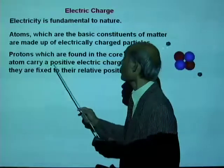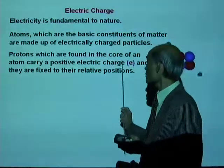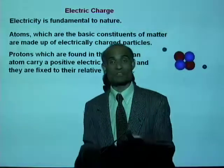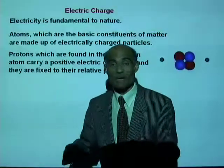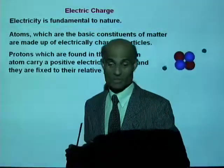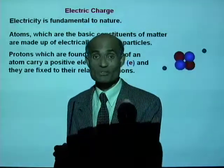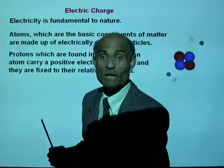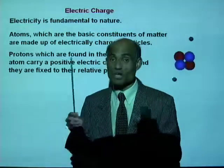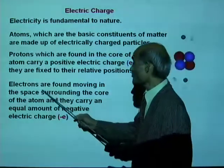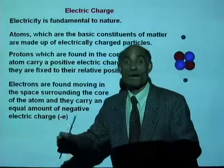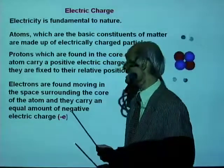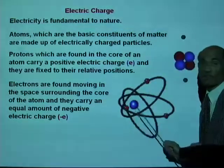Protons, found at the core of the atom, carry a positive electric charge and we represent that by the lowercase E. These protons are fixed to their relative positions, while electrons are free to move about. So when we talk about motion of electric charges, we actually mean motion of negatively charged electrons. Positive charges are fixed and do not move. Electrons are found moving in the space surrounding the core of the atom and they carry an equal and opposite amount of charge, negative E.